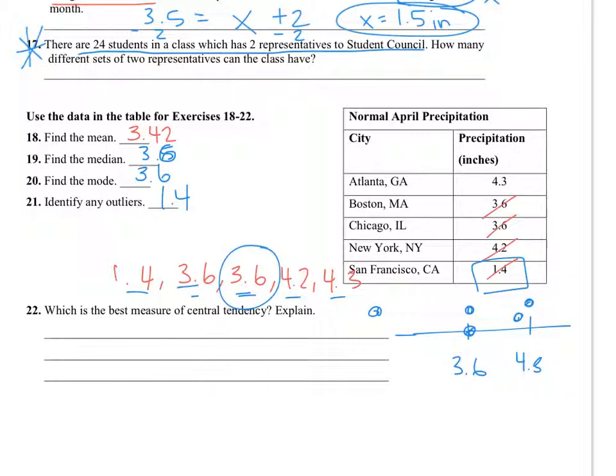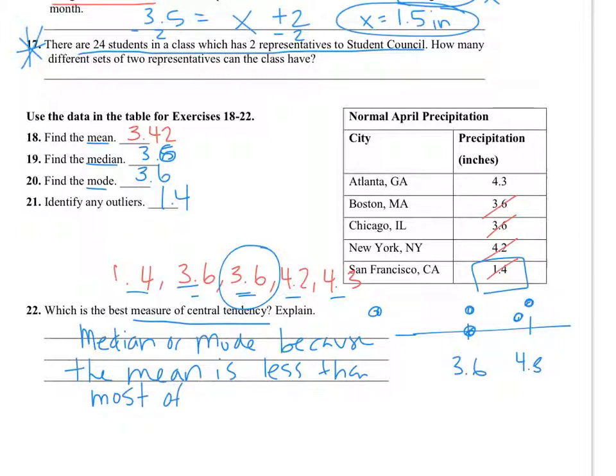22. What is the best measure of central tendency? Measures of central tendency are mean, median, and mode. So the best one would be the median or the mode. The median or mode, because the mean is less than most of the numbers. So if you look at the mean, it's 3.42.